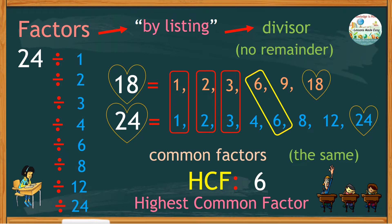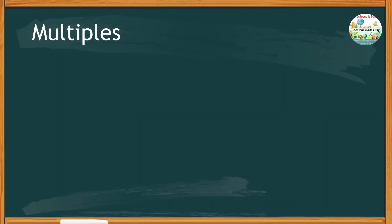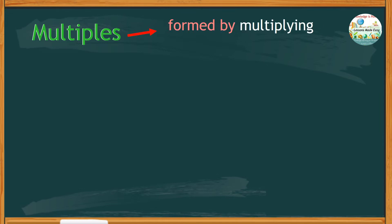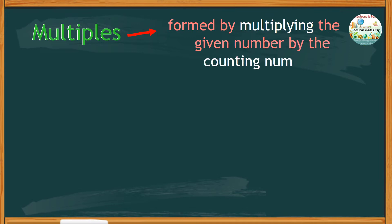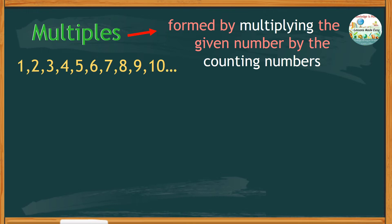In other words, a factor is limited only up to the target number. Now let's talk about multiples. Multiples are formed by multiplying the given number by the counting numbers — the usual numbers we use when we count: 1, 2, 3, 4, 5, 6, 7, 8, 9, 10, and so on. So finding the multiples of 6 is just like looking at the 6 times table.